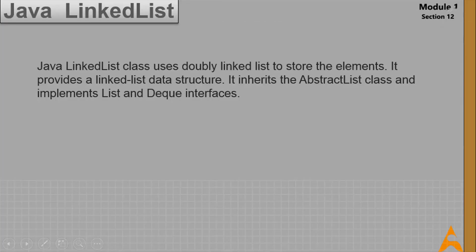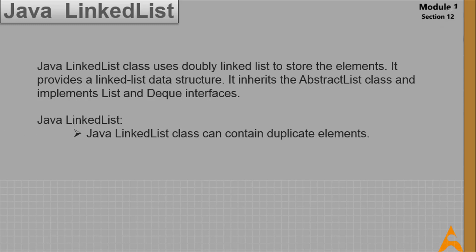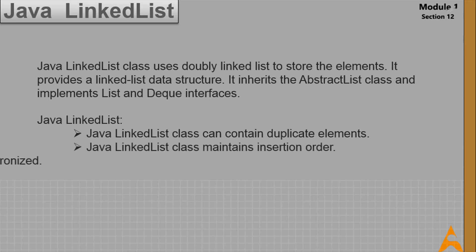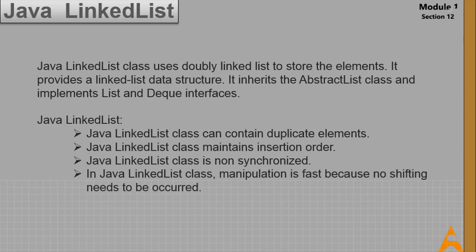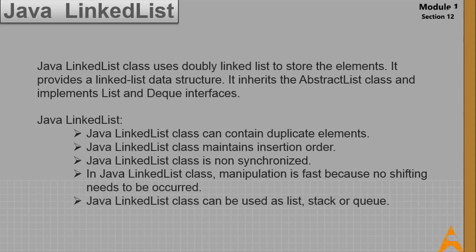Now let's discuss Java LinkedList. LinkedList class uses a doubly linked list to store elements. It inherits AbstractList class and implements List and Deque interfaces. Key points: it can contain duplicate elements, maintains insertion order, is non-synchronized, manipulation is fast because no shifting needs to occur, and it can be used as a list, stack, or queue.